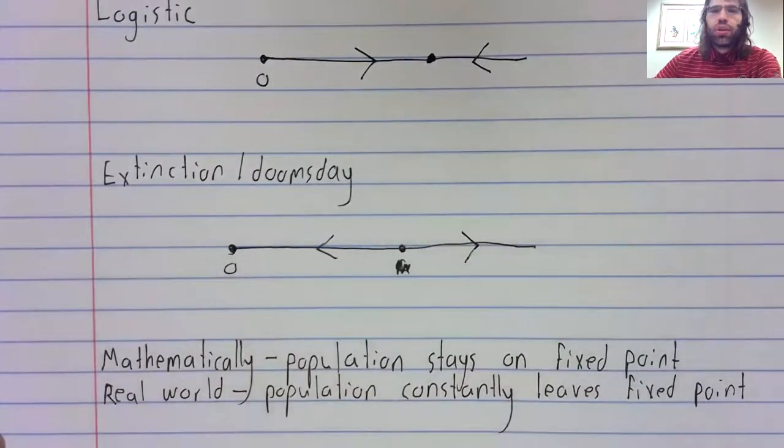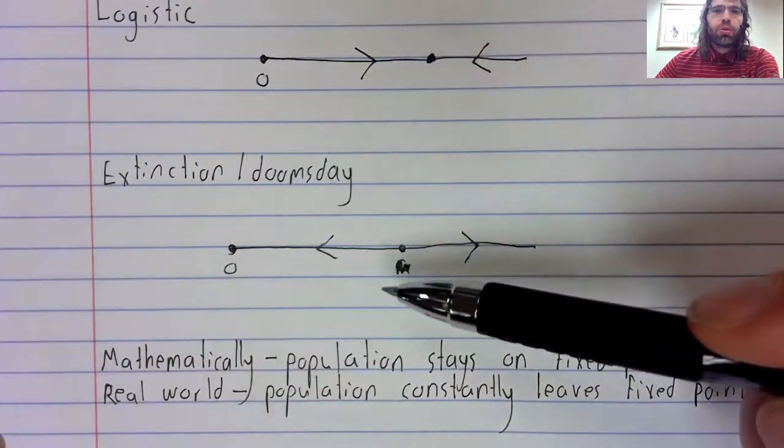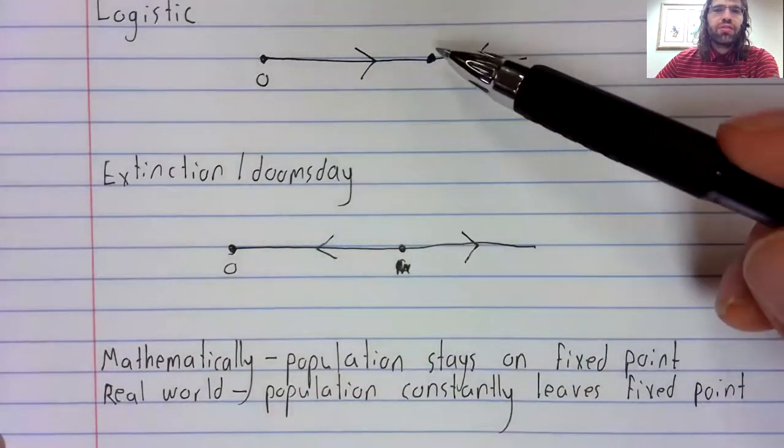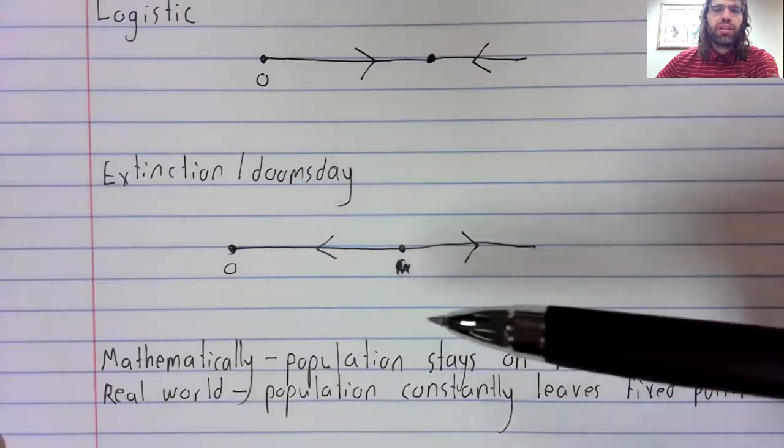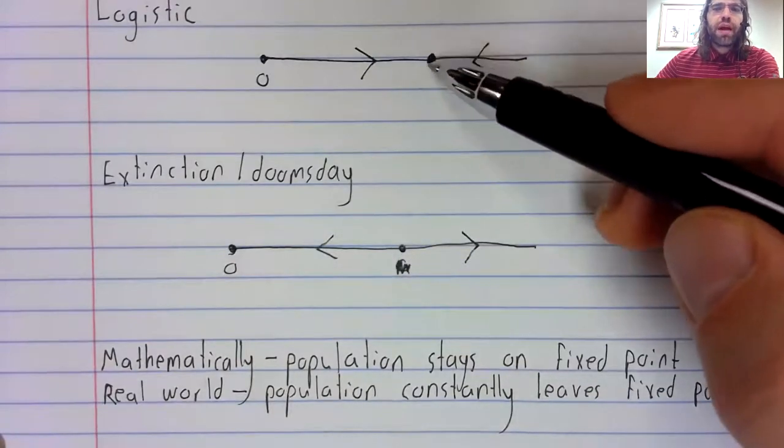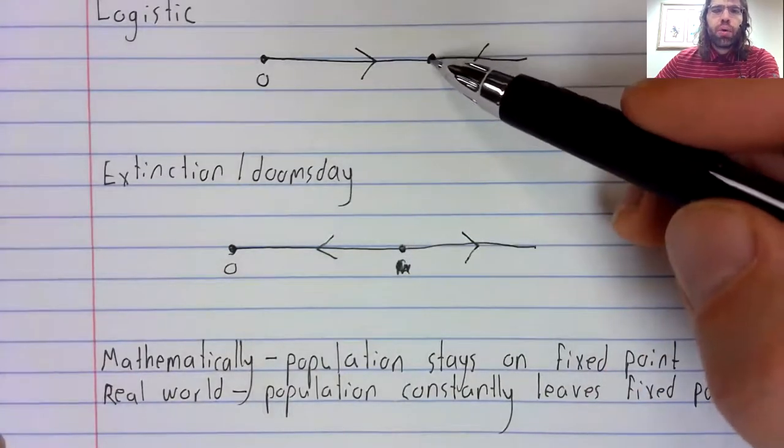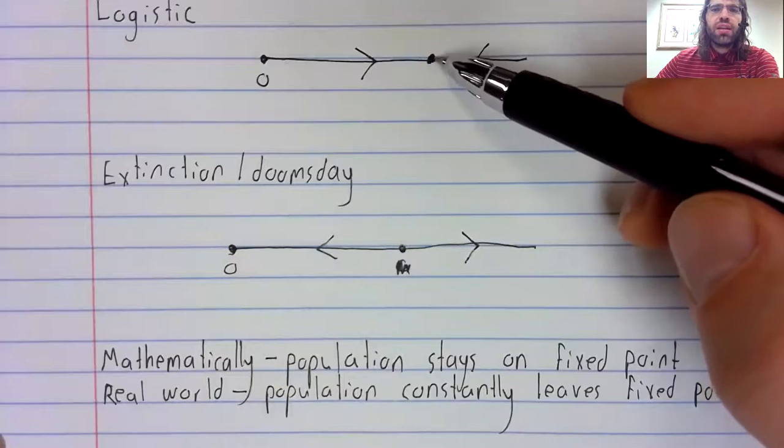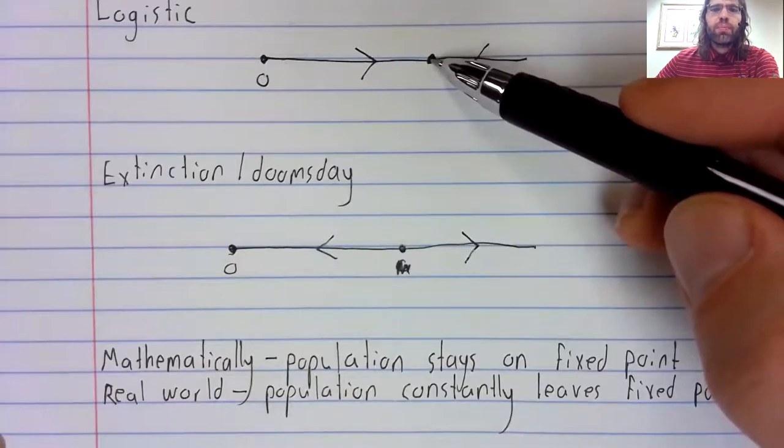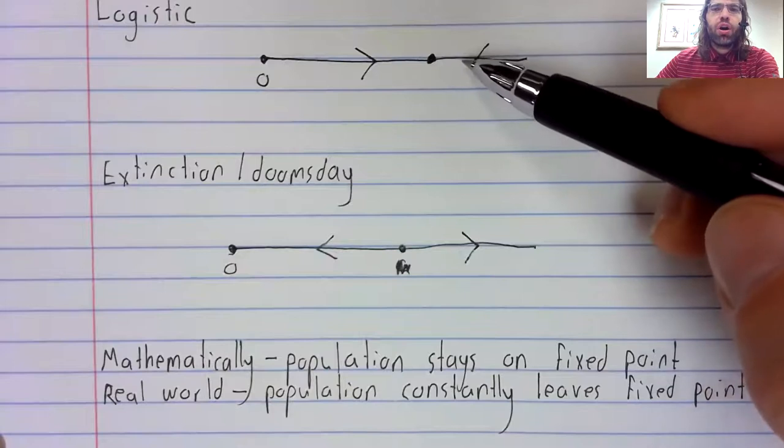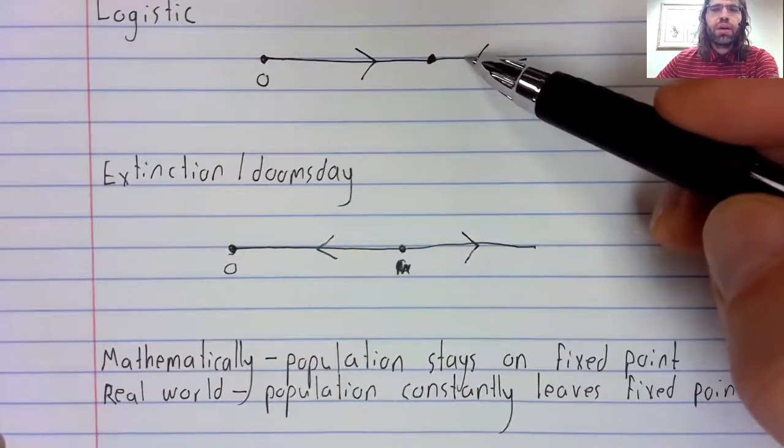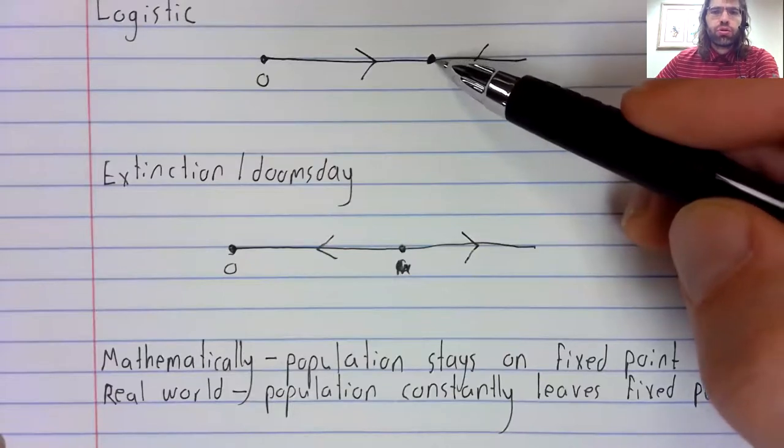Even though both of these models have these similar looking fixed points, these fixed points are actually very different. In the real world, a population under the logistic model will stay near the fixed point. It will occasionally be driven off the fixed point by random perturbations, but it will then return to it.